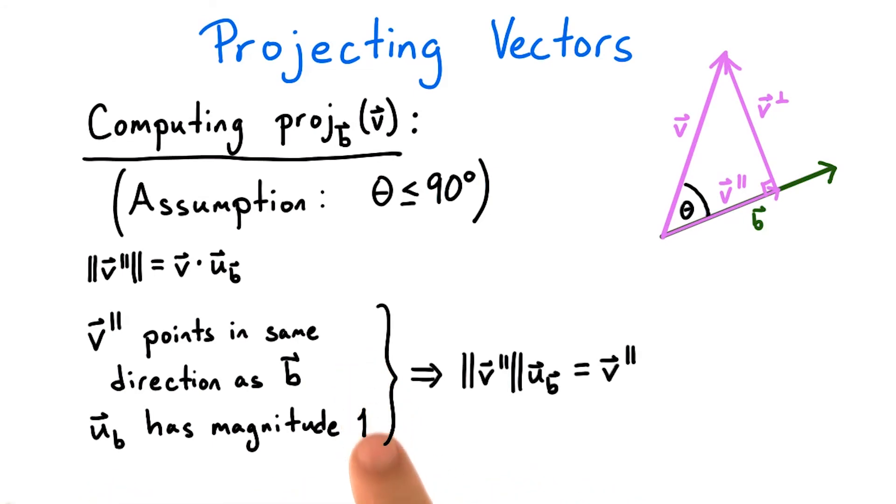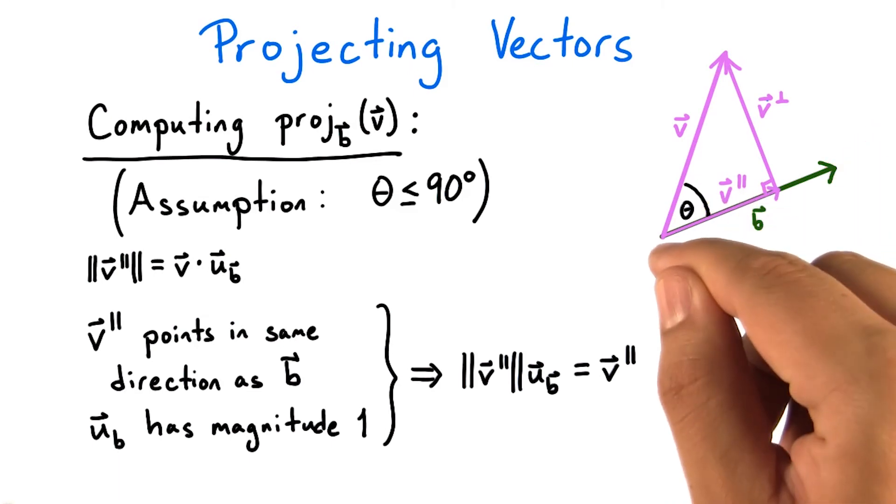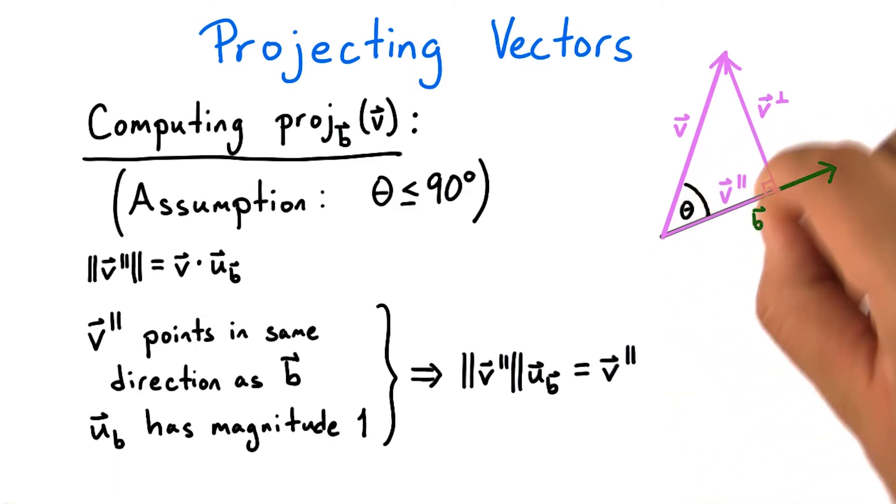What these two facts tell us is that if we scale the normalization of b by exactly the length of v parallel, then we'll actually get the vector v parallel. Imagine taking a unit vector that's right here and just stretching it just the amount needed to get to v parallel. That's what we're doing.